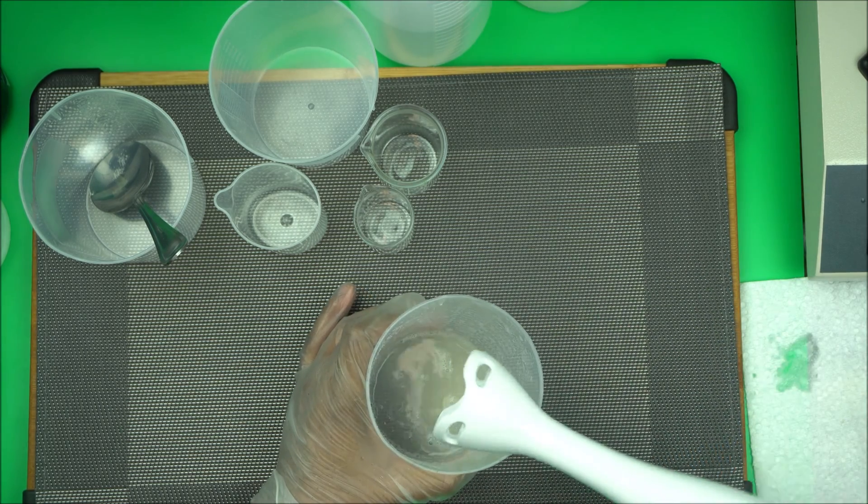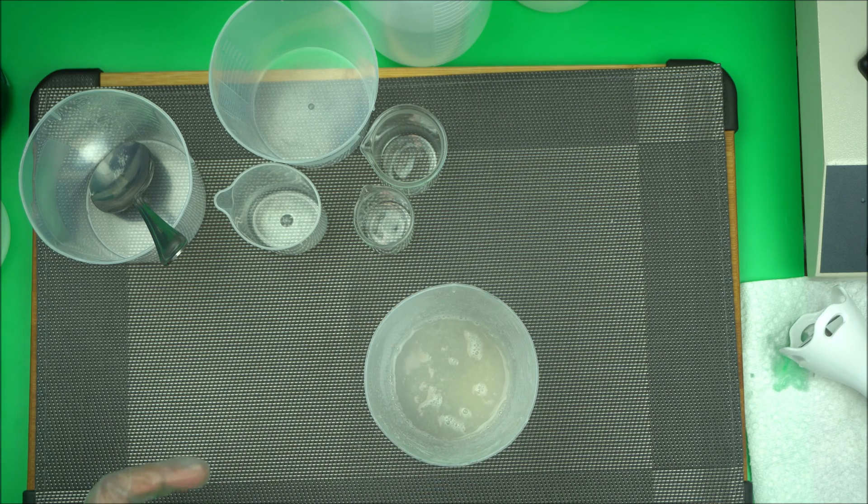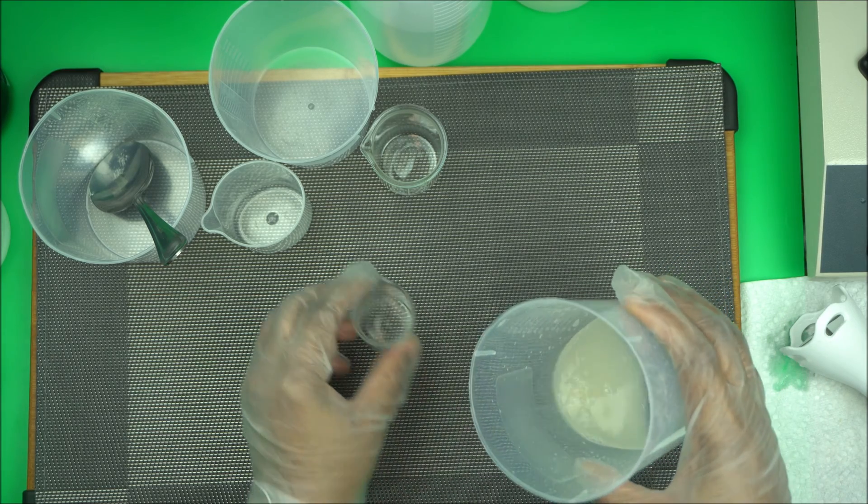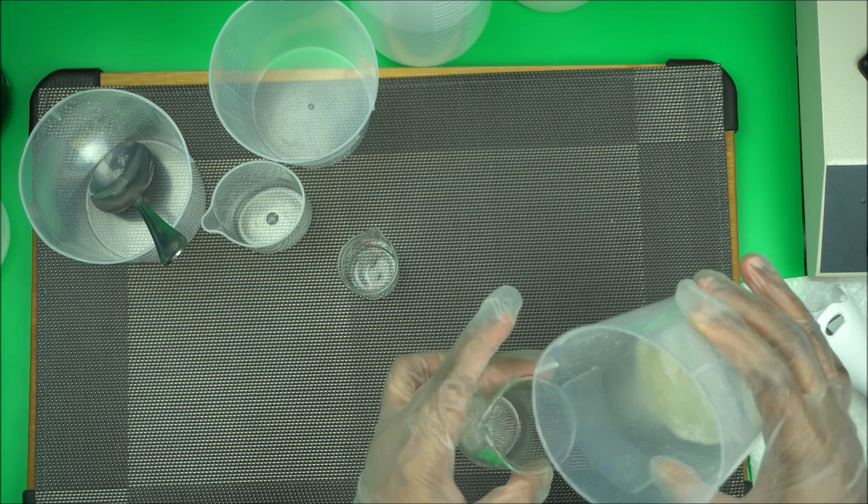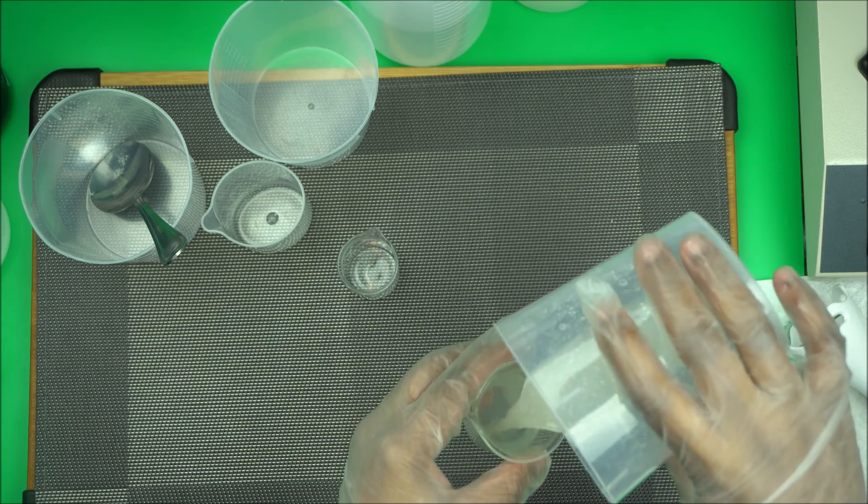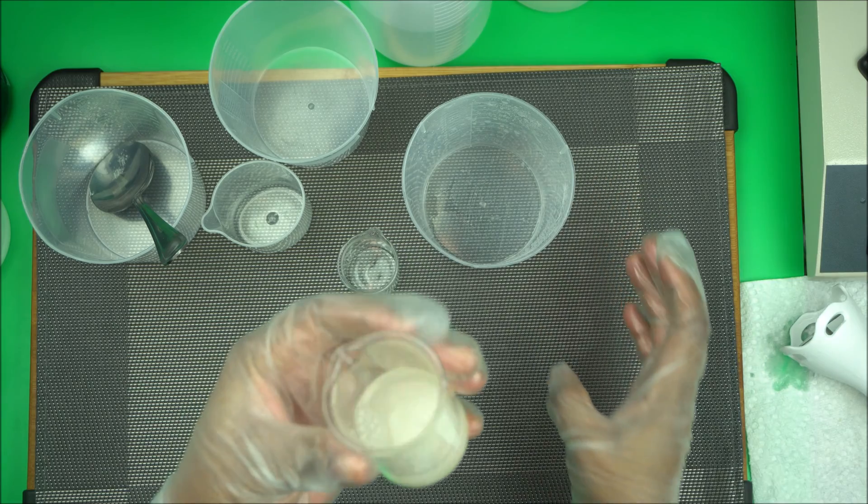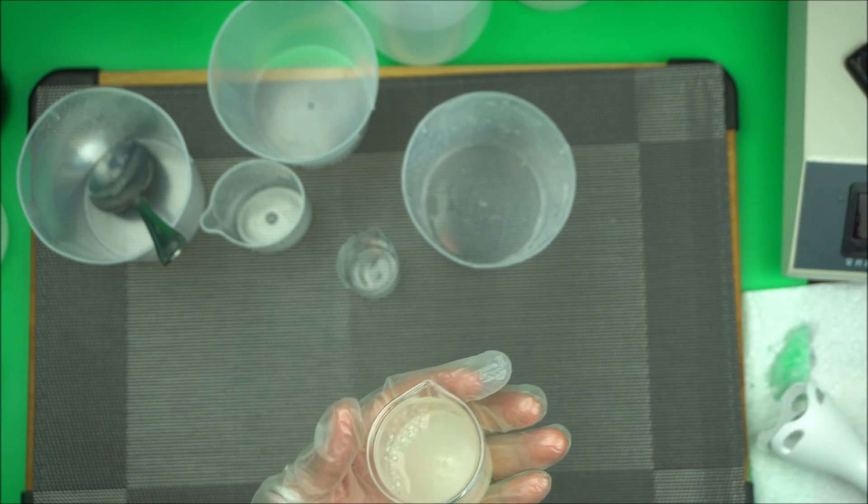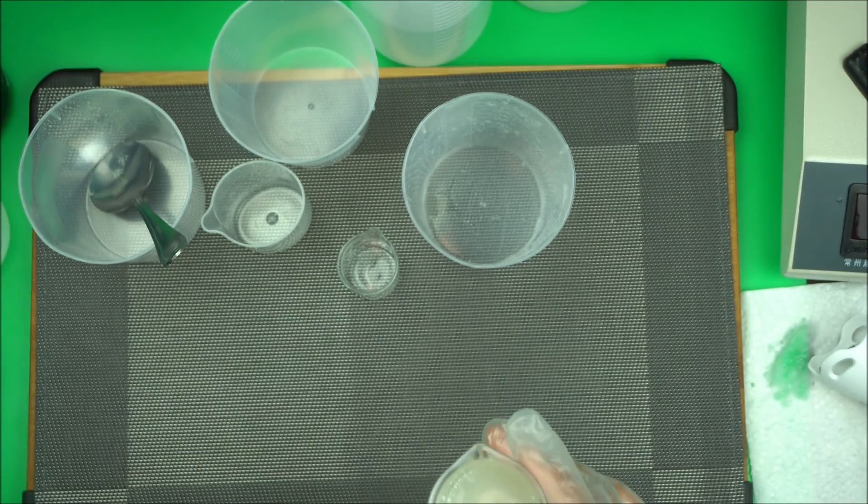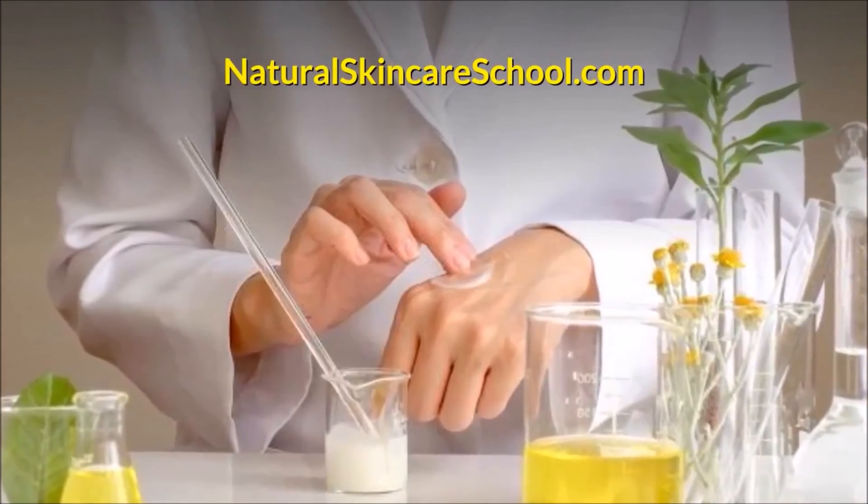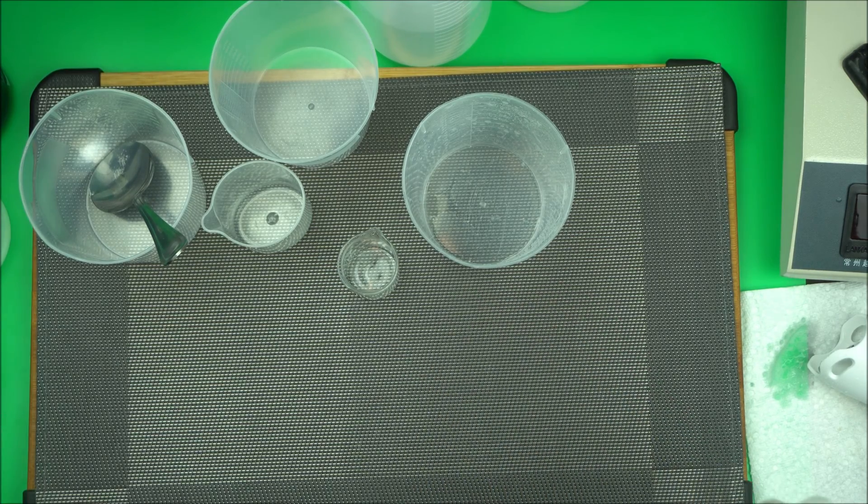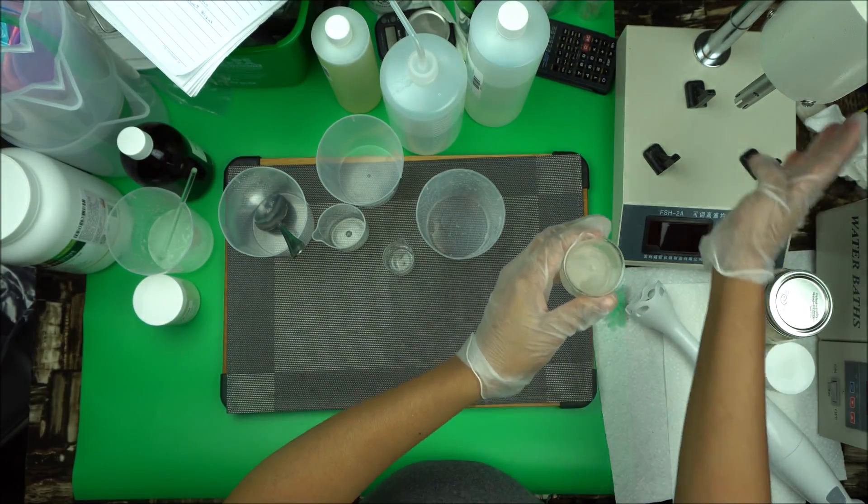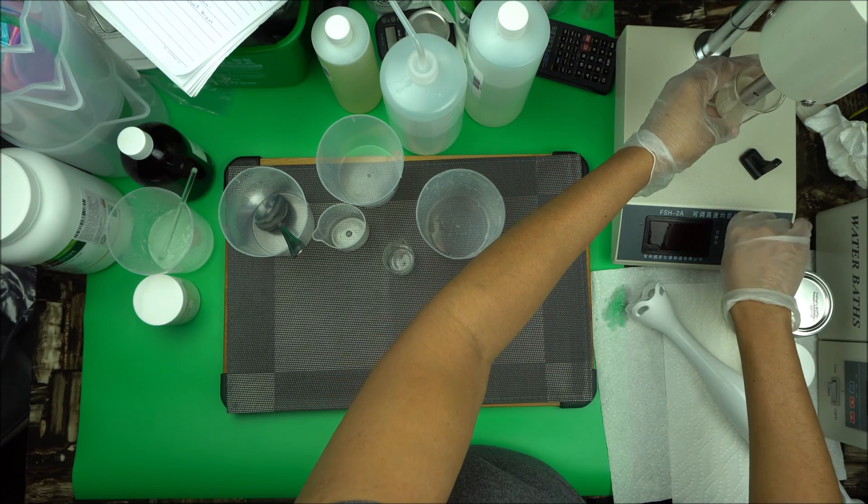Another way I blend this is using a homogenizer. I'll bring the homogenizer to the camera now so you can see it. This is a professional version. HEC has a way of resisting blending, so you have to make sure you use a homogenizer if you want to get a smoother result. I'm going to use it to do more blending.